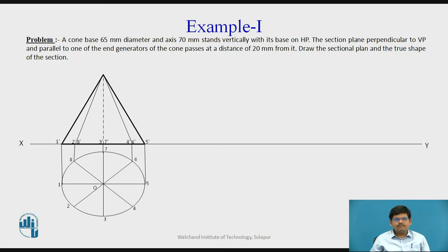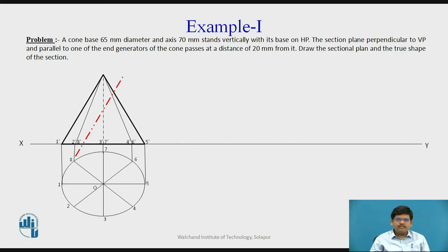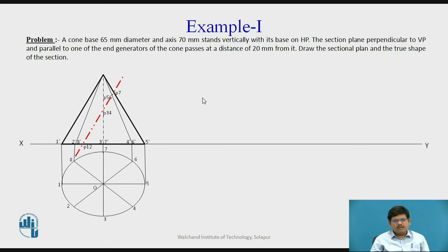Moving further, we name the points. Then we have a section plane. Here you can see this is an end generator and this is an end generator. Since a specific end generator has not been mentioned, the cutting plane can be taken parallel to any of the end generators. In this case, I have taken it parallel to the end generator O2-1, and 20 mm from it. This is my cutting plane, represented by a red line. We mark the points where the cutting plane cuts the generators. As we don't have edges in a cone, we consider generators.